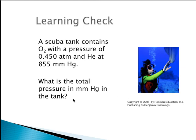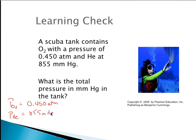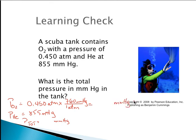Let's do a quick problem. A scuba tank has a pressure of O₂ (oxygen) of 0.450 atmospheres and helium at 850 millimeters mercury. What is the total pressure in millimeters mercury in the tank? Well, pO₂ is 0.450 atmospheres. The pressure of helium is 855 millimeters mercury. It's asking me for the total pressure in millimeters mercury. Let's convert the pressure of oxygen to millimeters mercury first.